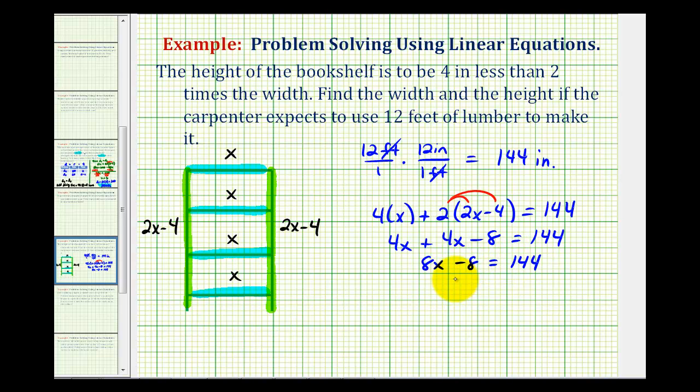So now we'd add 8 to both sides of the equation. So we'd have 8x equals, this would be 152. Now divide both sides by 8. So we have x equals this quotient here. And 152 divided by 8 is equal to 19.